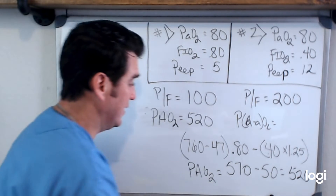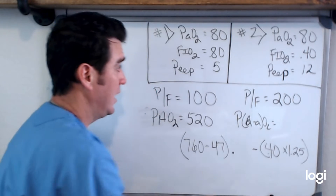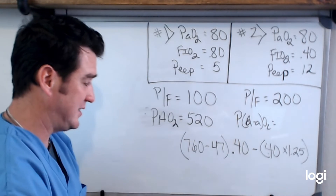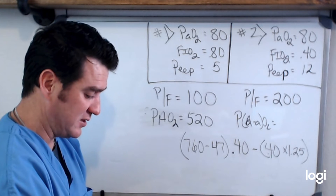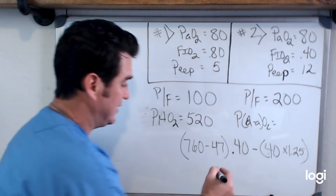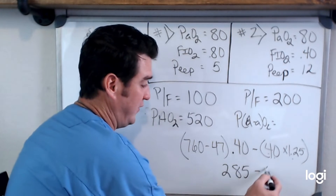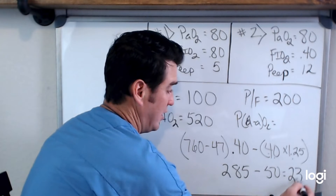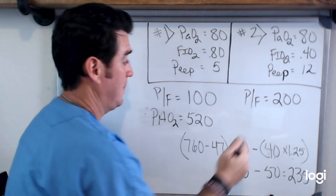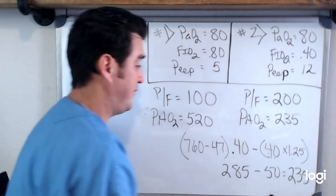For patient number two, instead of 0.8 we plug in 0.4, and we keep CO2 at 40 — these patients are otherwise identical. So: 760 minus 47 is 713, times 0.4 is 285, minus 50 equals 235. So the PAO2 for patient two equals 235.